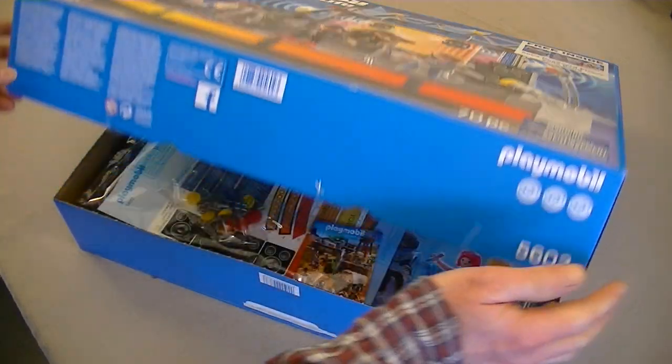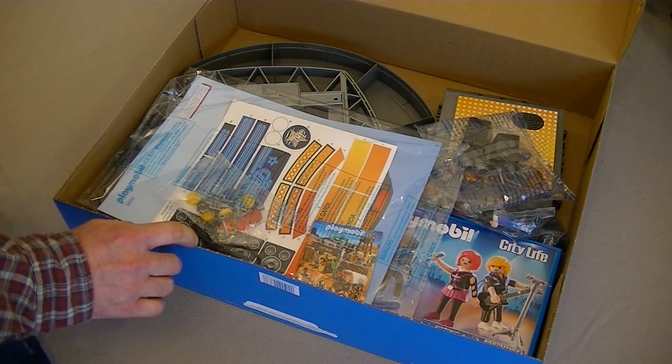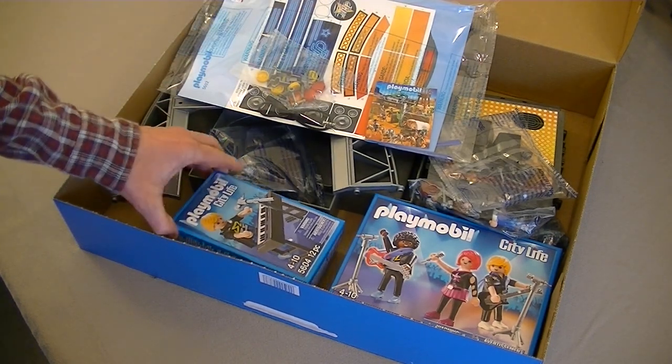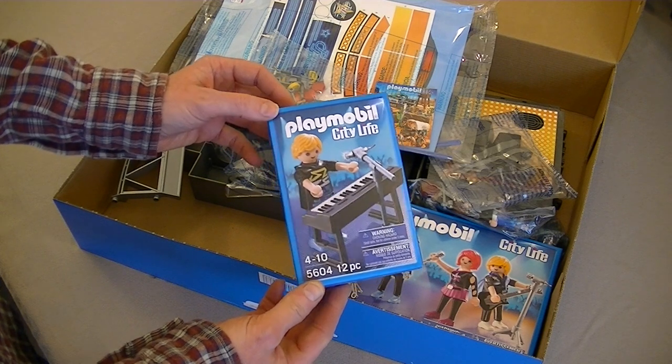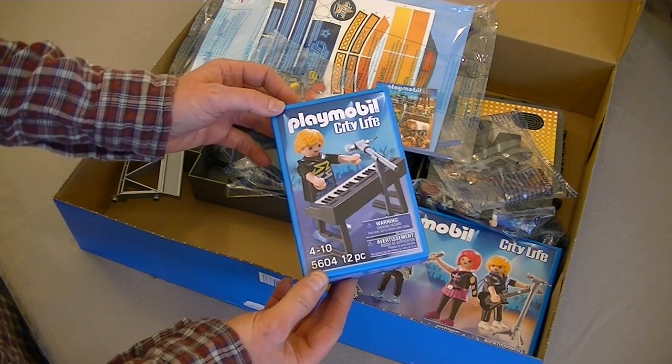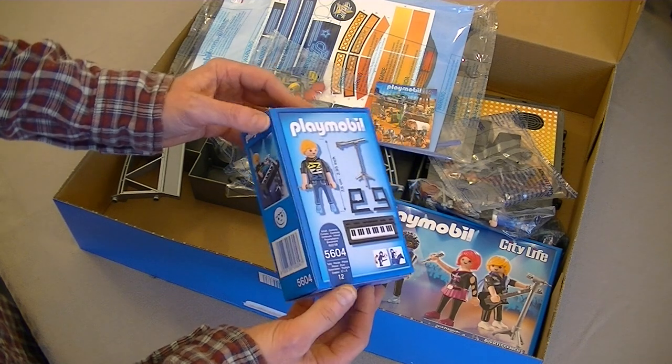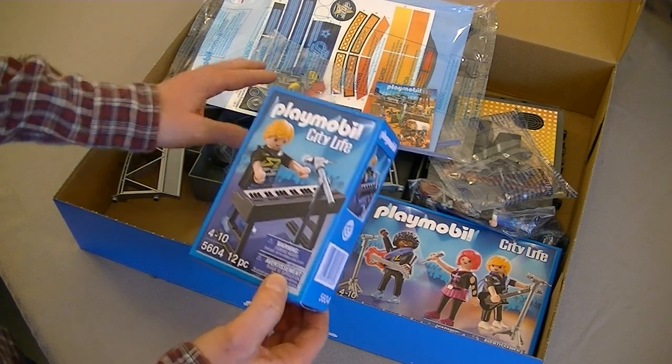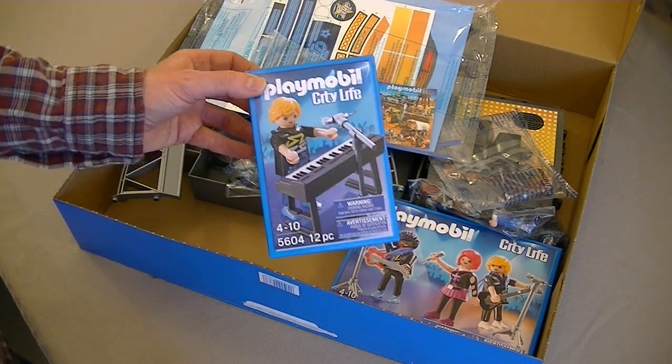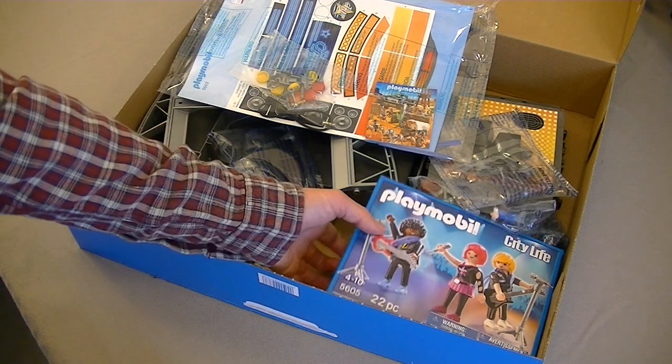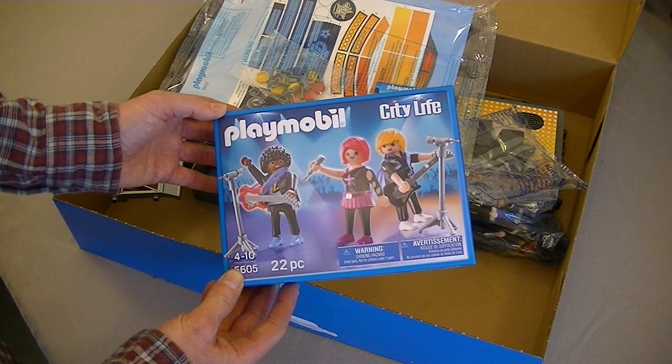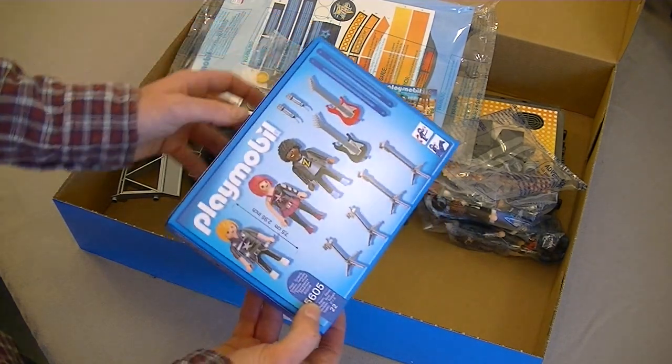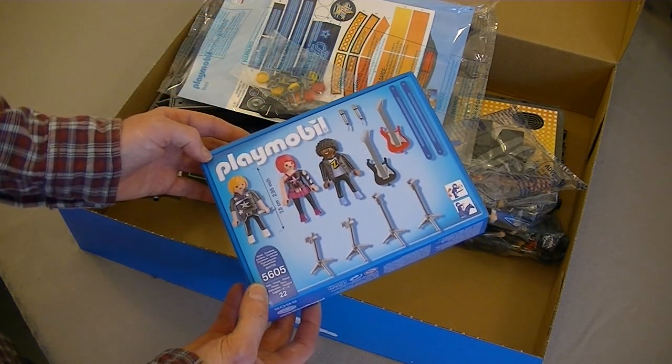But for the purpose of this video I'm just going to concentrate on the main set item 5602 and I'll be doing another shorter review on these two sets here that are made to accompany this particular stage. So I'll just open the box and as you can see typical Playmobil packaging. And here are the two free sets that I'll be showing you later. That's the Playmobil City Life keyboard player with a keyboard and microphone.